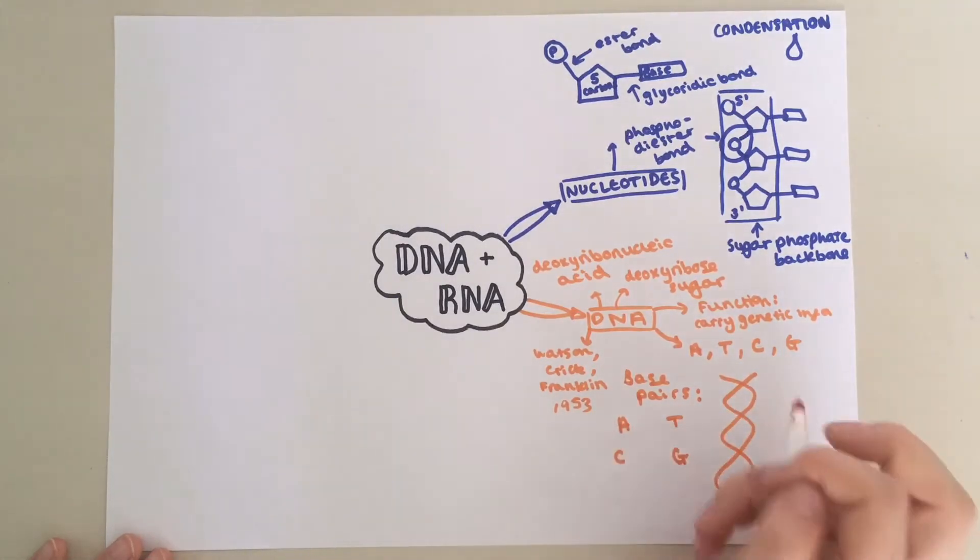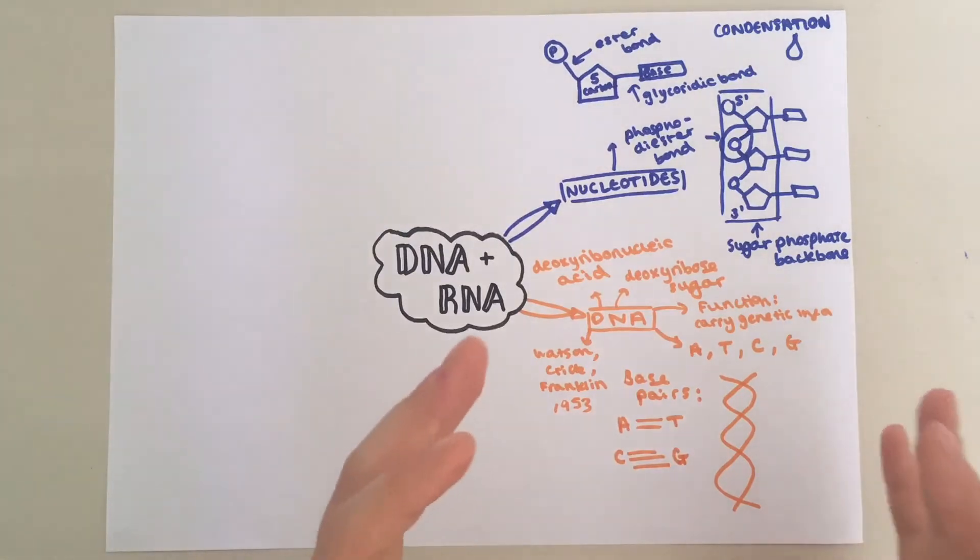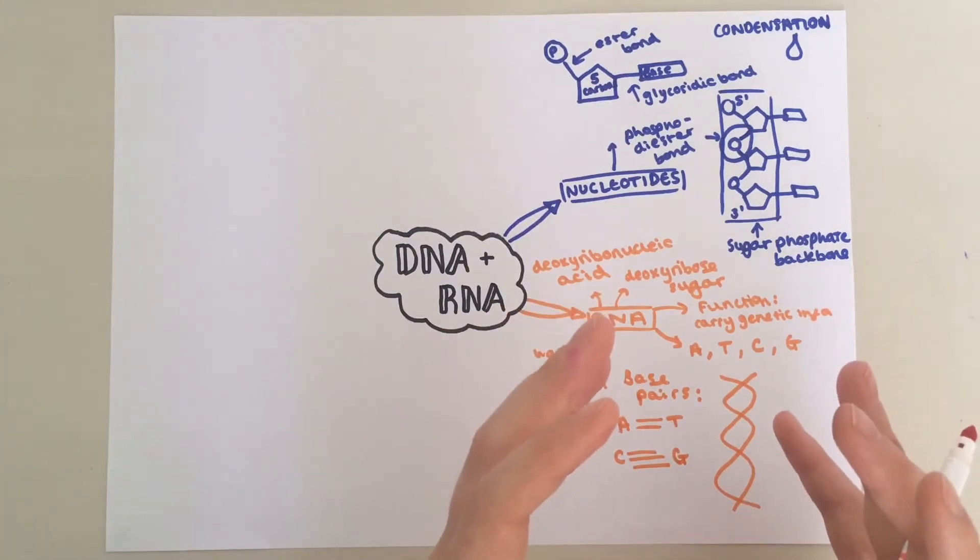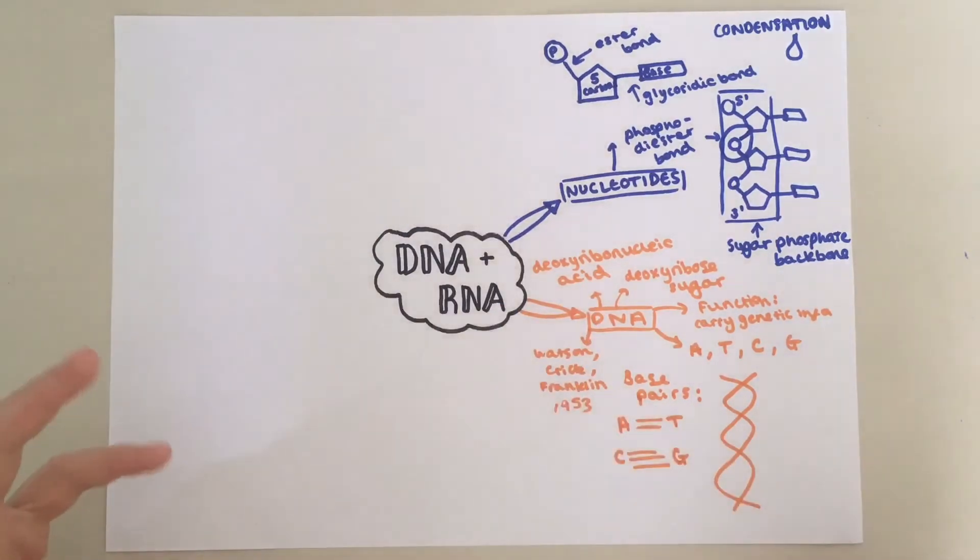Between A and T there are always two hydrogen bonds, whereas between C and G there are three hydrogen bonds. This means that if you have a higher percentage of C-G base pairs compared to A-T base pairs in a double helix of DNA, then the structure will be more stable because you will have more hydrogen bonds overall.